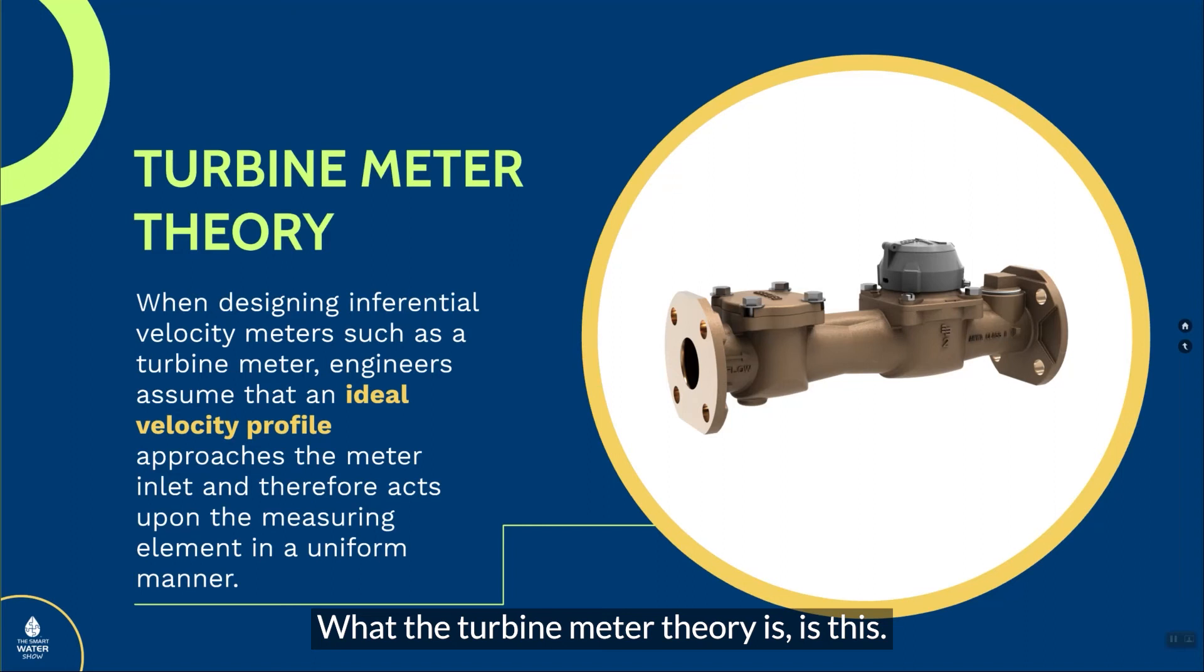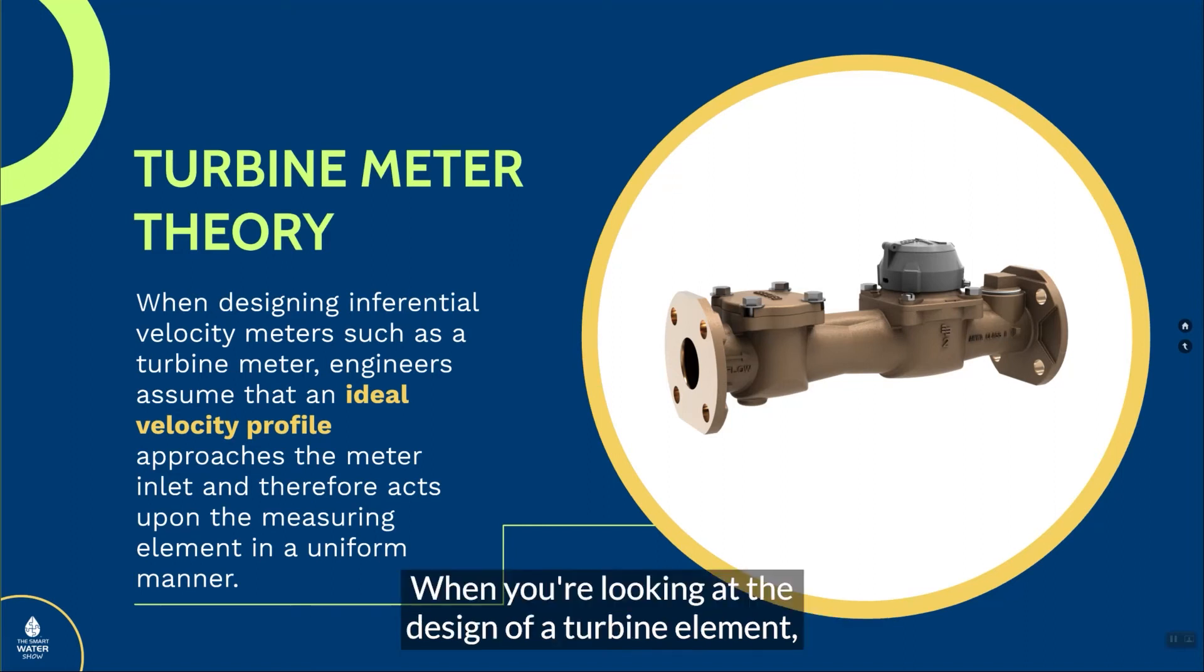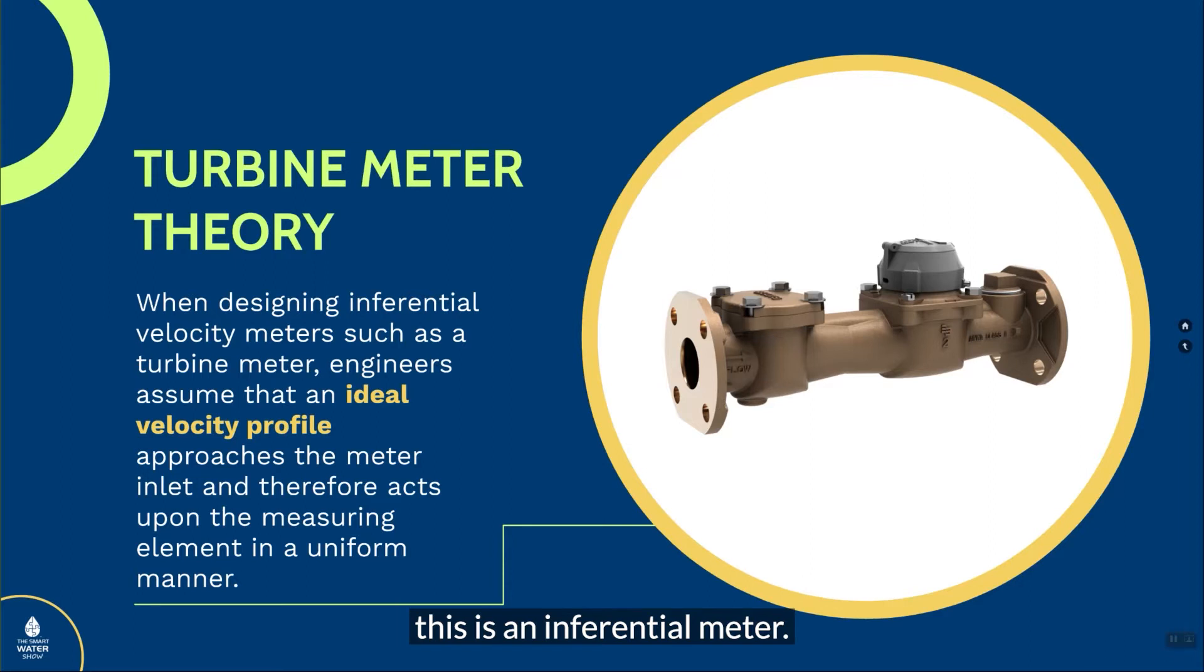What the turbine meter theory is, is this: When you're looking at the design of a turbine element, this is an inferential meter. It's inferring a velocity into a volume. In order for that to work correctly, the engineer that designs this is assuming that I have an ideal velocity profile.